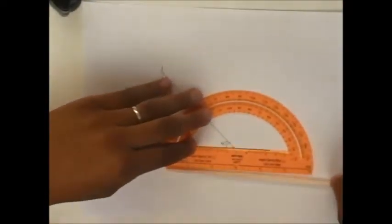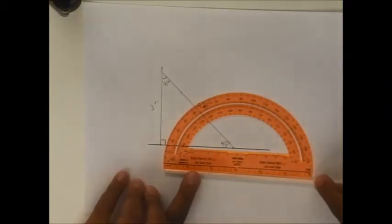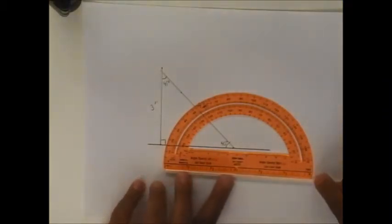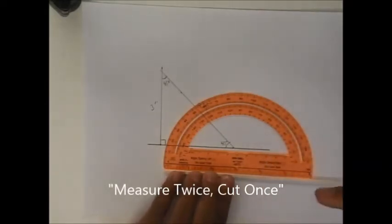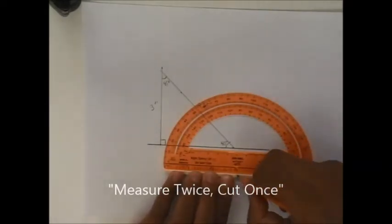So I'm going to measure. Remember our theme: measure twice, cut once. So I'm going to use two pieces that are 3 inches long. I'm going to make my mark here at 3 inches.